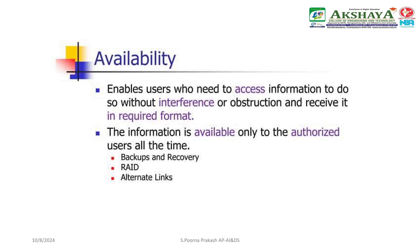Availability, like other aspects of security, may be affected by purely technical issues — for example, a malfunctioning part of a computer or communication device — natural phenomena such as wind or water, or human causes whether accidental or deliberate. To enable users who need to access information to do so without interference or obstruction, the information must be available only to authorized users at all times. Backup and recovery and redundant alternatives are also important measures.